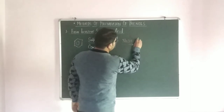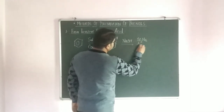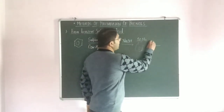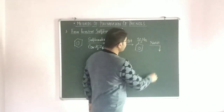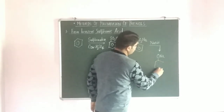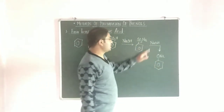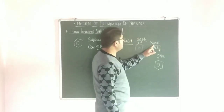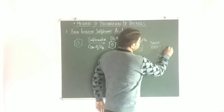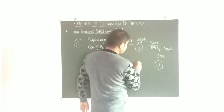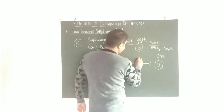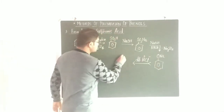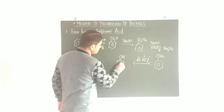Benzene sulfonic acid is then treated with NaOH — that is fused with NaOH — to form the sodium salt of benzene sulfonic acid (SO3Na). This sodium salt is further fused with NaOH at 573 Kelvin, forming sodium phenoxide (ONa) on the ring, with elimination of Na2SO3. Finally, reaction with dilute acid (H⁺ and Cl⁻) gives NaCl as a byproduct and OH attached on the benzene ring — phenol. This is the method of preparation of phenol from benzene sulfonic acid.